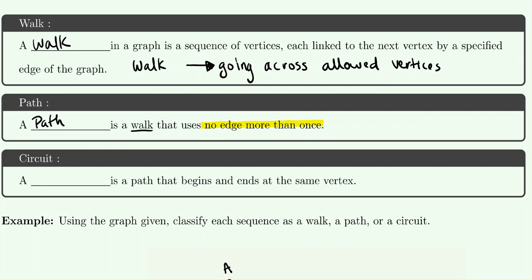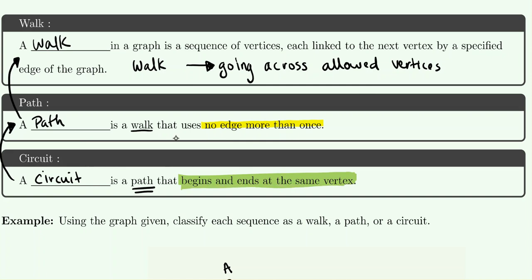A circuit is an even stronger definition. A circuit is first a path — so a circuit inherits the idea of a path, and a path inherits the idea of a walk. In addition to being a path, a circuit must begin and end at the same vertex. So wherever you start, you've got to get back to the same place by using the allowable edges of the graph without using any edge more than once.